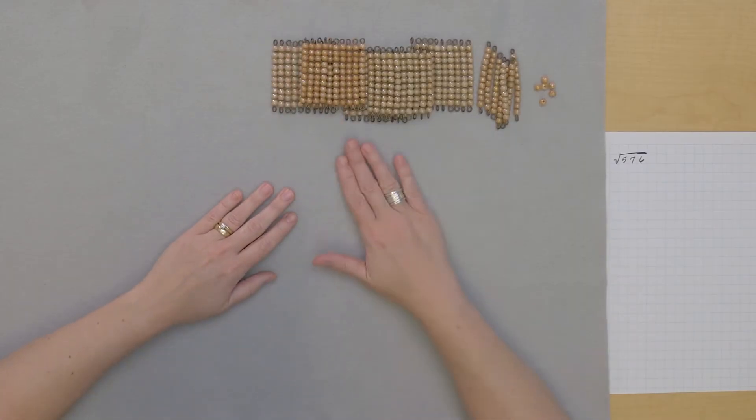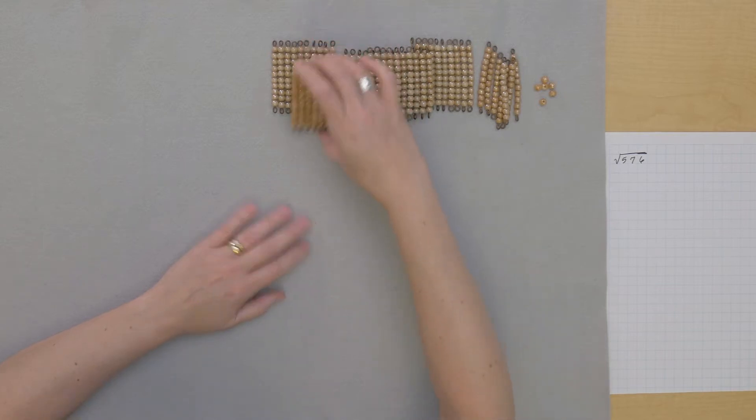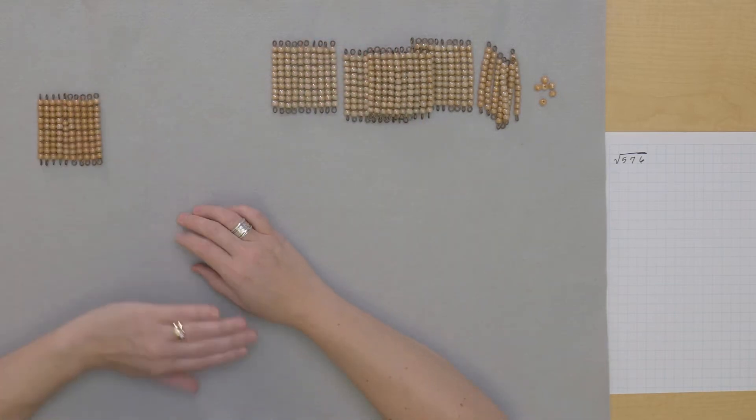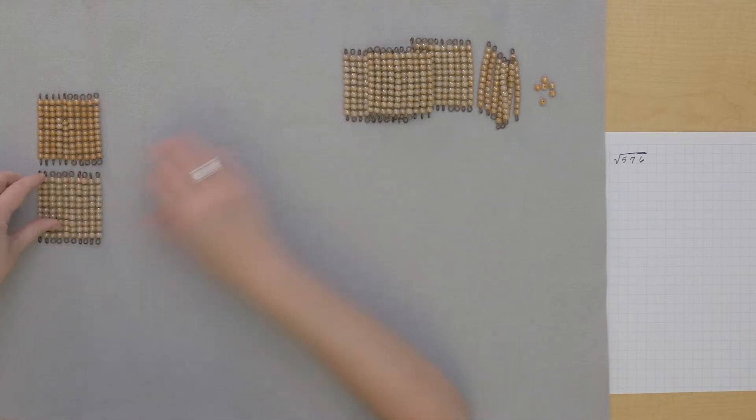So out of this quantity, 576, I'm going to build the biggest square I can. I'm going to start with the largest category, so we'll start with hundreds. Well, that's a square. Let's see if I could build another one.